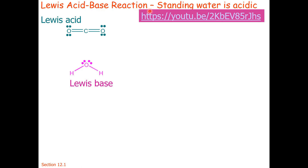Lewis acid-base reactions happen all the time very naturally. Standing water is actually a little bit acidic — it's not pH 7 — because there's a reaction between carbon dioxide and water. The water here is a Lewis base with a lone pair, and carbon dioxide is the Lewis acid in which the carbon is partially positive and attractive to electrons.